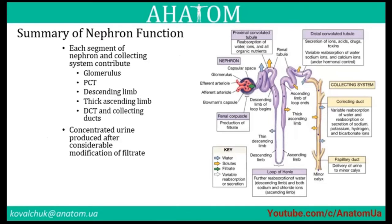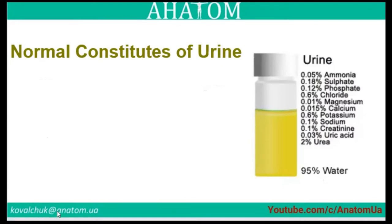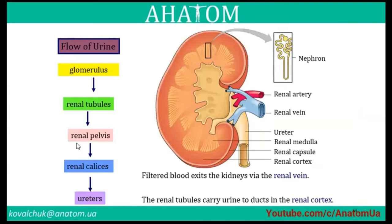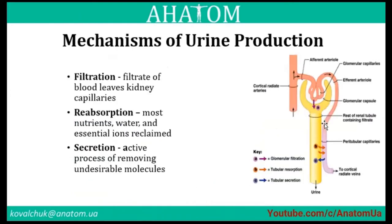Summary of nephron function: each segment of the nephron and collecting system contributes to concentrated urine production after considerable modification of the filtrate. Normal urine is really 90 to 95 percent water with small concentrations of different chemical structures. Flow of urine: glomerulus → renal tubules → renal pelvis → renal calyces → ureters. The mechanisms of urine production are filtration, reabsorption, and secretion.